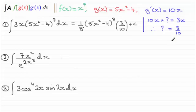So all that's left to do now is just to clean this up. So 1 8th times 3 tenths that's going to give us 3 80ths. And so we've got 3 80ths then times all of 5x squared minus 4 to the power 8 plus that constant of integration c.